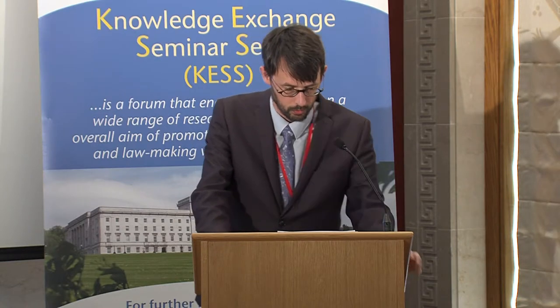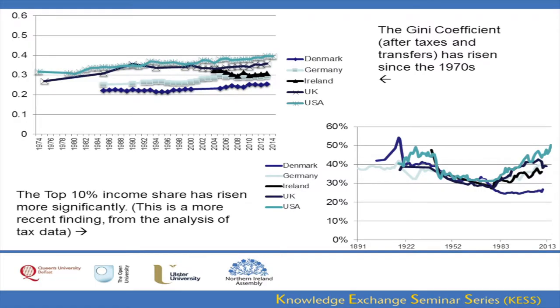This rise is associated with market liberalization and aspects of global change — global trade and technology change. A different type of data is also shown here: tax authority data taken from national tax authorities to show the actual income share held by different groups — in this case, the top 10 percent income share.